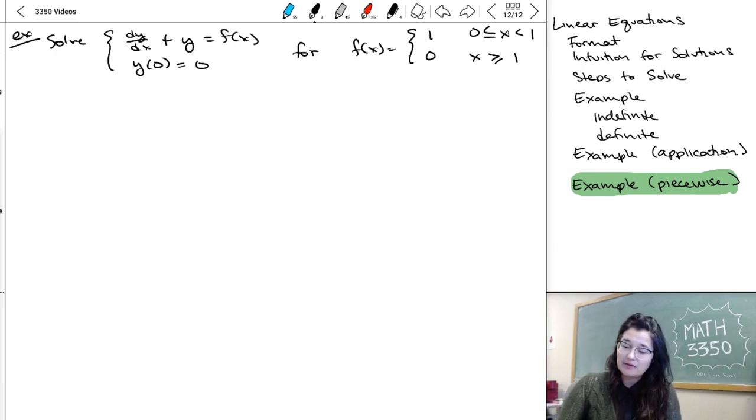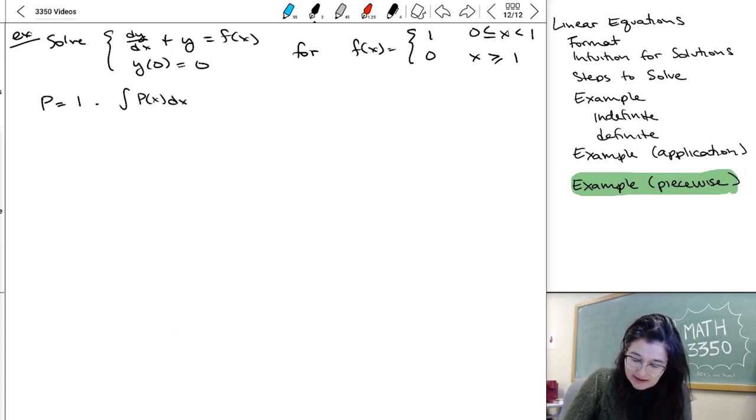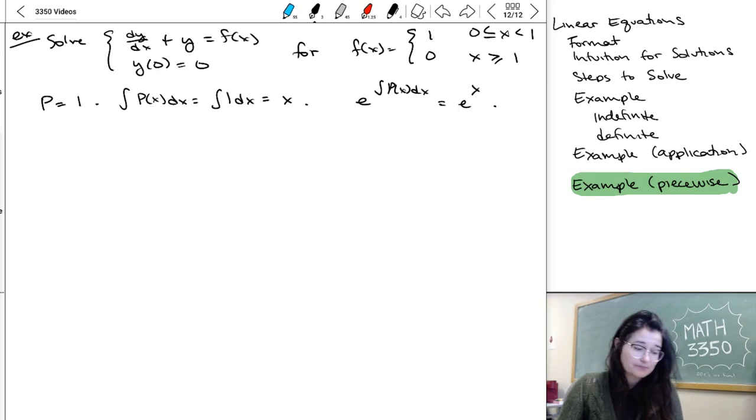And so this piecewise part looks weird, but we definitely have a linear equation so we could go ahead and jump right in and at least start dealing with that. So we know that our p is 1. So our integral of p of x dx is going to be integral of 1 dx is just x. And so our e to integral of p of x dx is just e to x. So even if I don't know what I'm going to do about f yet, I can at least plug this in and start rearranging my ODE.